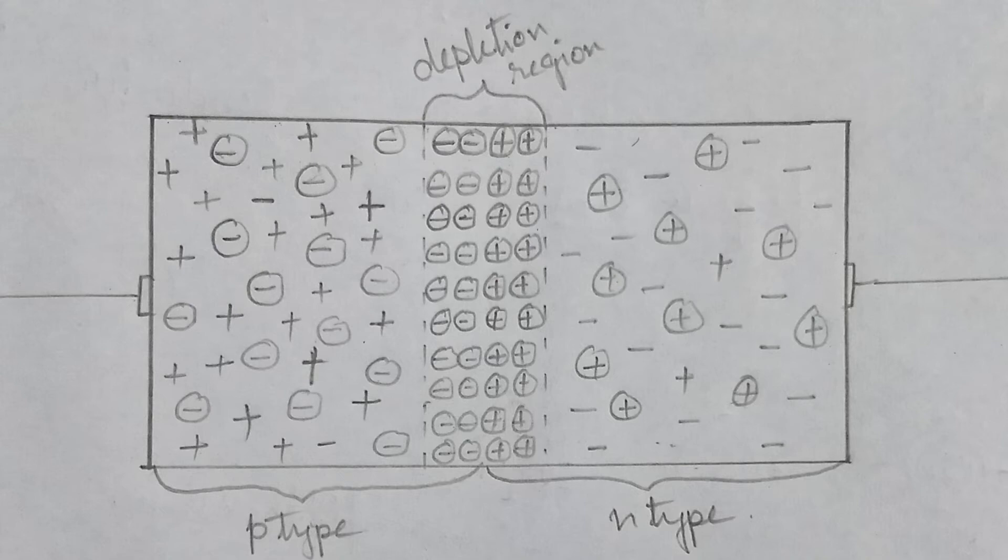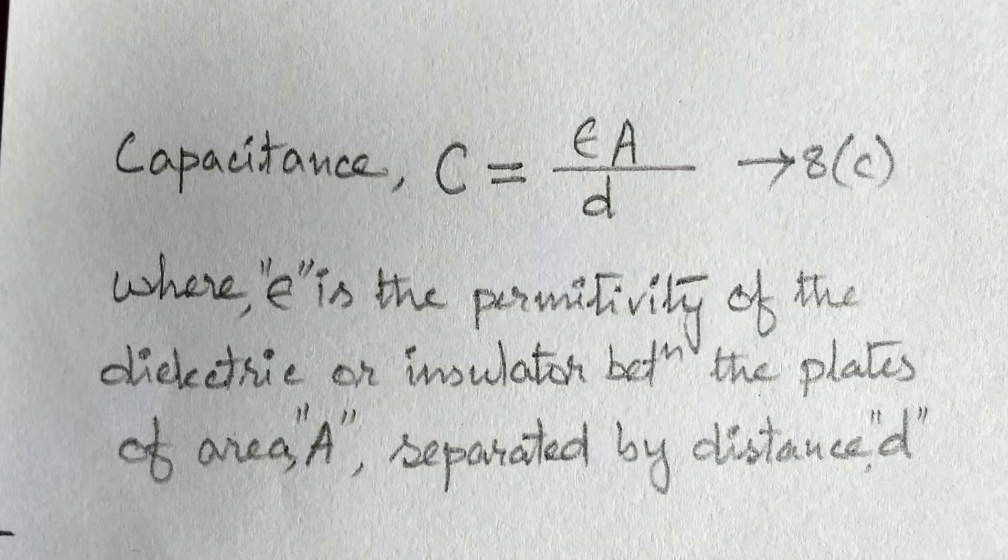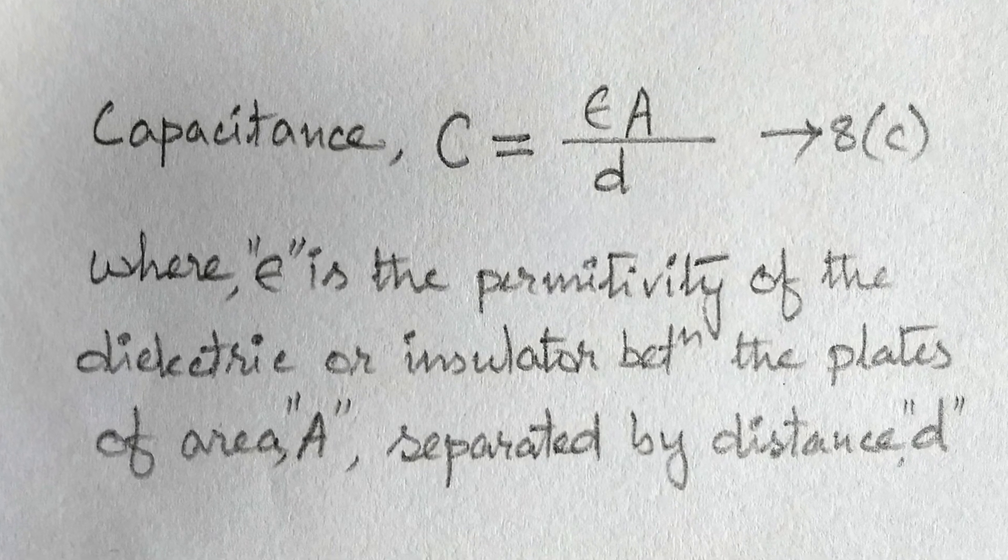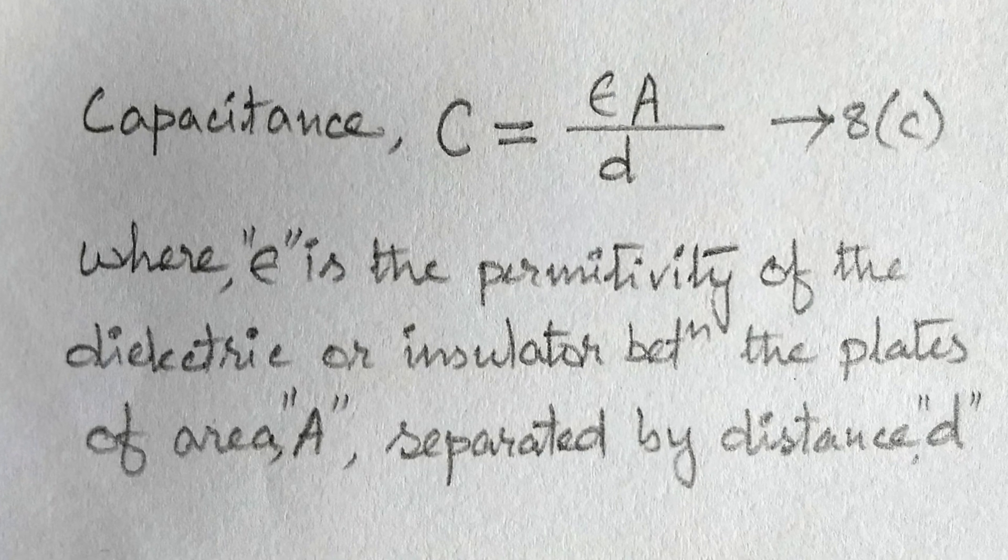This depletion region acts as capacitance of a parallel plate capacitor, that the capacitance is given by capital C equal to epsilon A divided by small letter D.